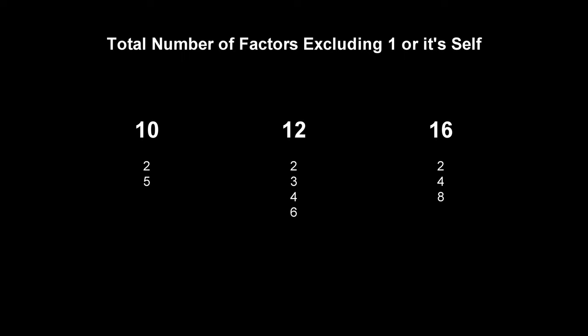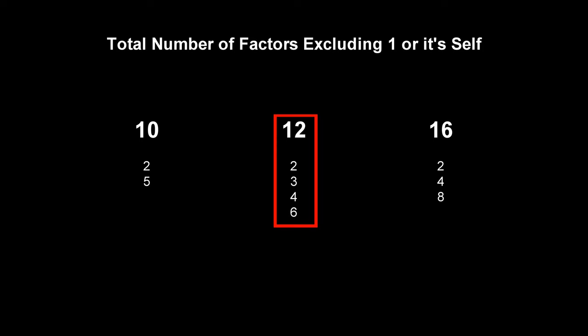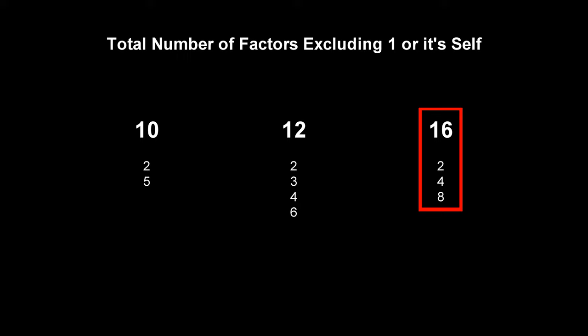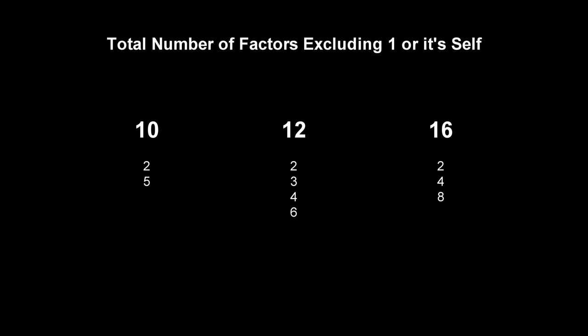Let's have a look at how many factors each number has, excluding one or itself. A factor is something that the number can be evenly divided into. 10 has 2 and 5; 12 has 2, 3, 4 and 6; and 16 has 2, 4 and 8. Here 10 has the least amount of factors, and 5 is not a very useful factor to have. 3, 4, 6 and 8 are all more useful factors to have.